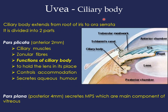The second part of the uveal tract is the ciliary body, which extends from the root of the iris anteriorly to the ora serrata posteriorly. The ora serrata is the terminal part of the sensory retina, and the ciliary body continues posteriorly as choroid. Anatomically, the ciliary body is divided into two parts: the anterior part, which is thick and folded, called pars plicata, and the posterior part, which is thin and plain, called pars plana.